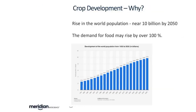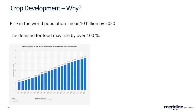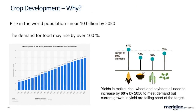The world population is increasing and is predicted to reach nearly 10 billion by 2050. This means there's going to be a huge demand on food — they believe it's going to rise by about 100% by 2050, requiring considerable technological progress. If you look at the four staple foods — maize, rice, wheat, and soya — they need to increase by 60% by 2050 to meet current demands in yield, and they are falling short of this.